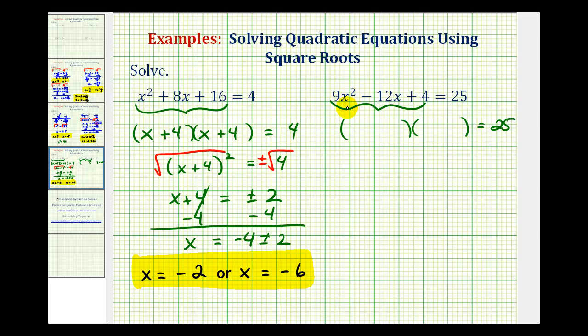For the factors of 9x squared, we'll use 3x and 3x. For the factors of 4, we'll use 2 and 2. And because the middle term is negative, we'll use minus and minus. And to make sure this works, we'll check the sum of the inner product and outer product to make sure it's negative 12x.